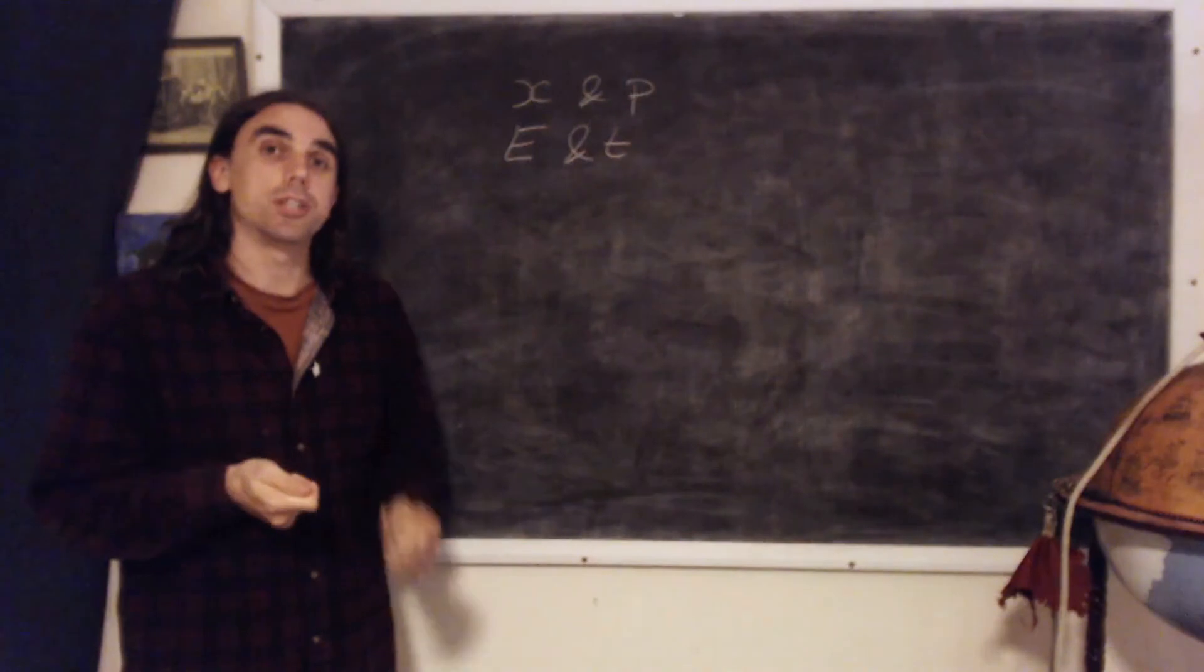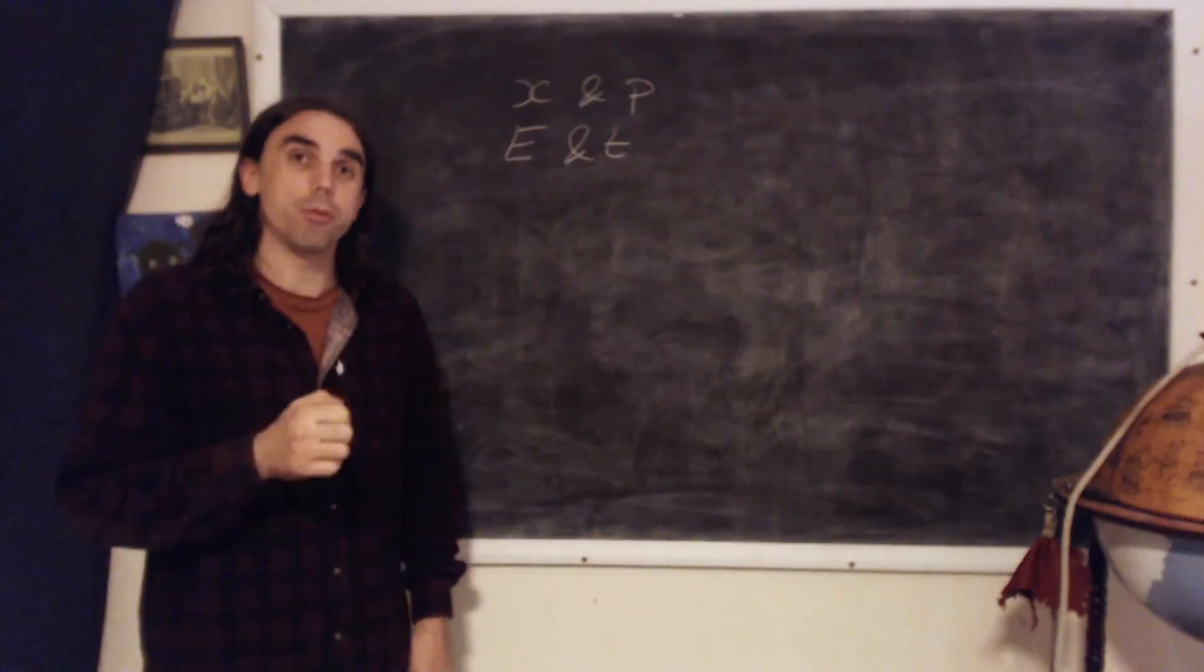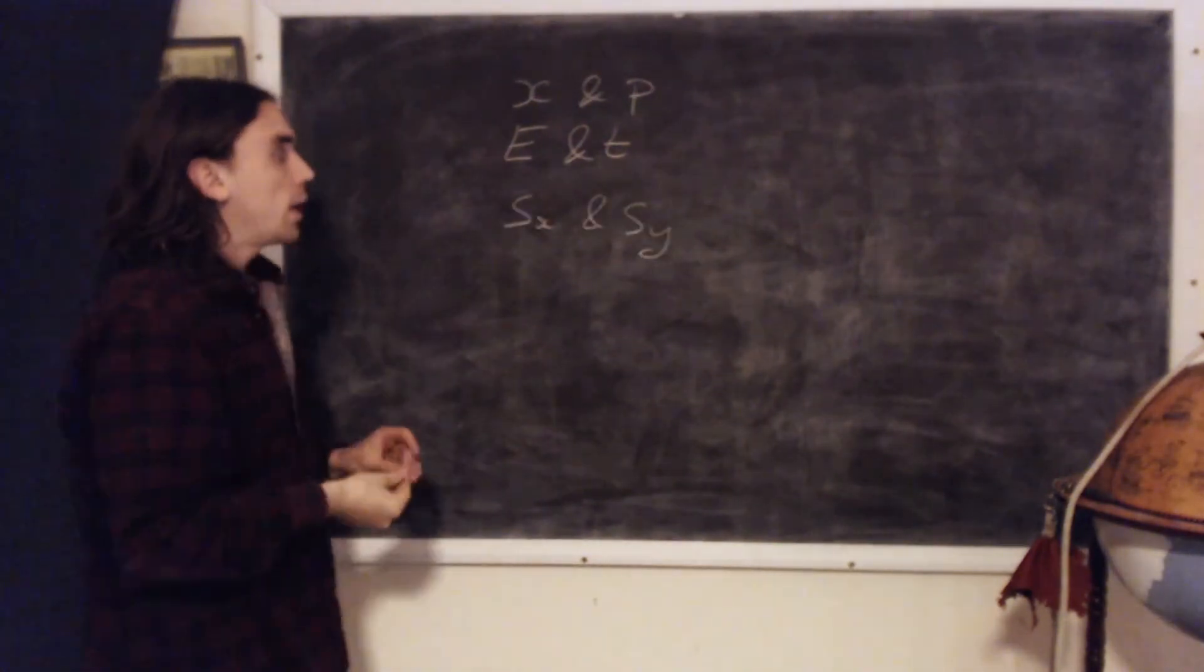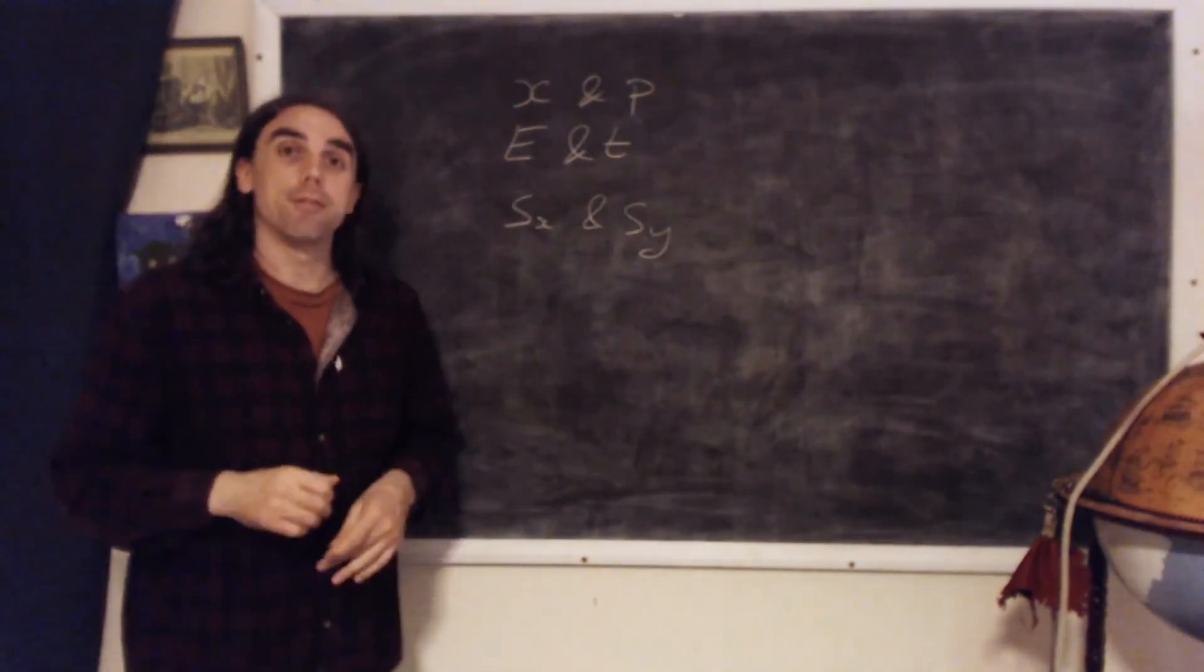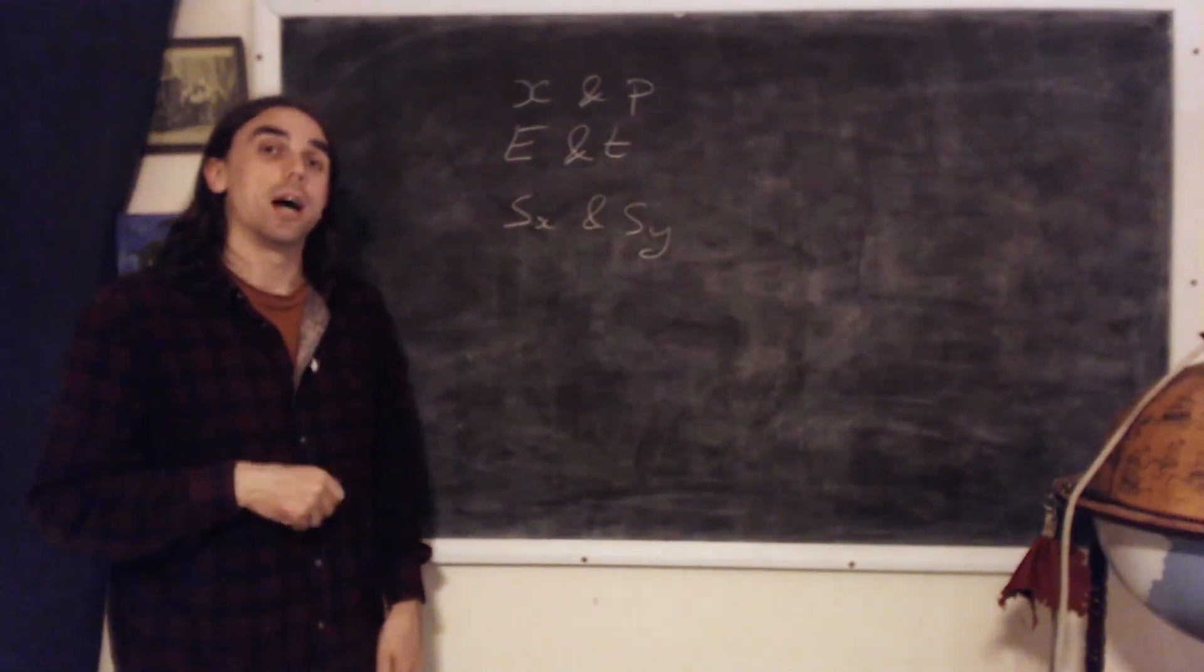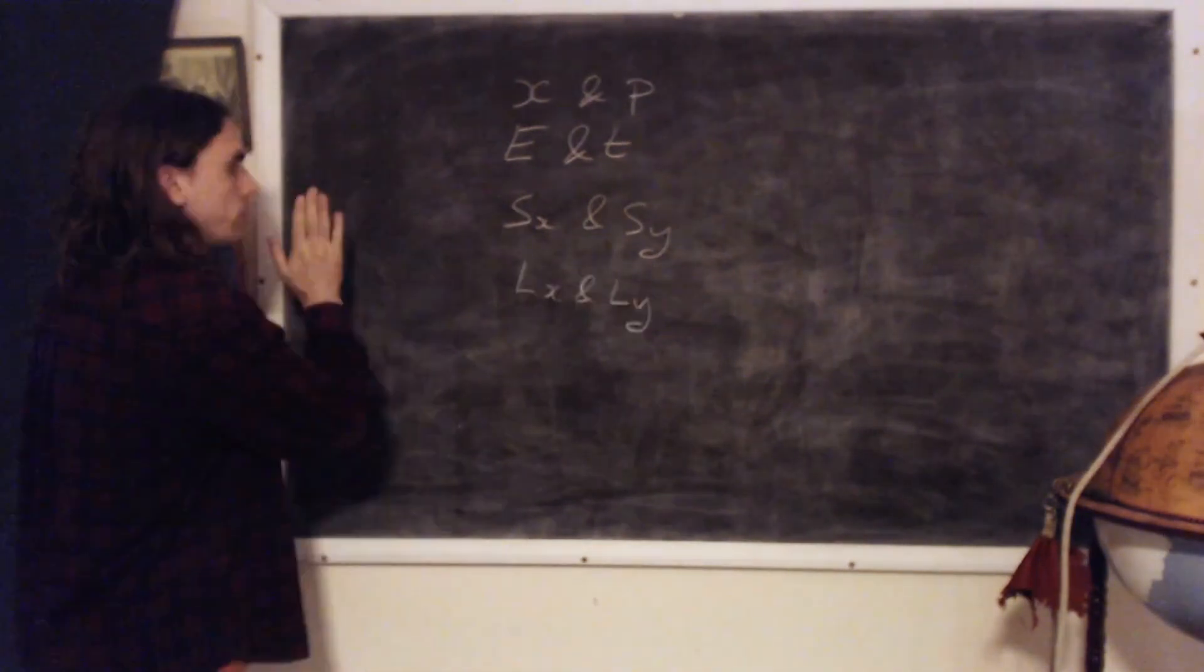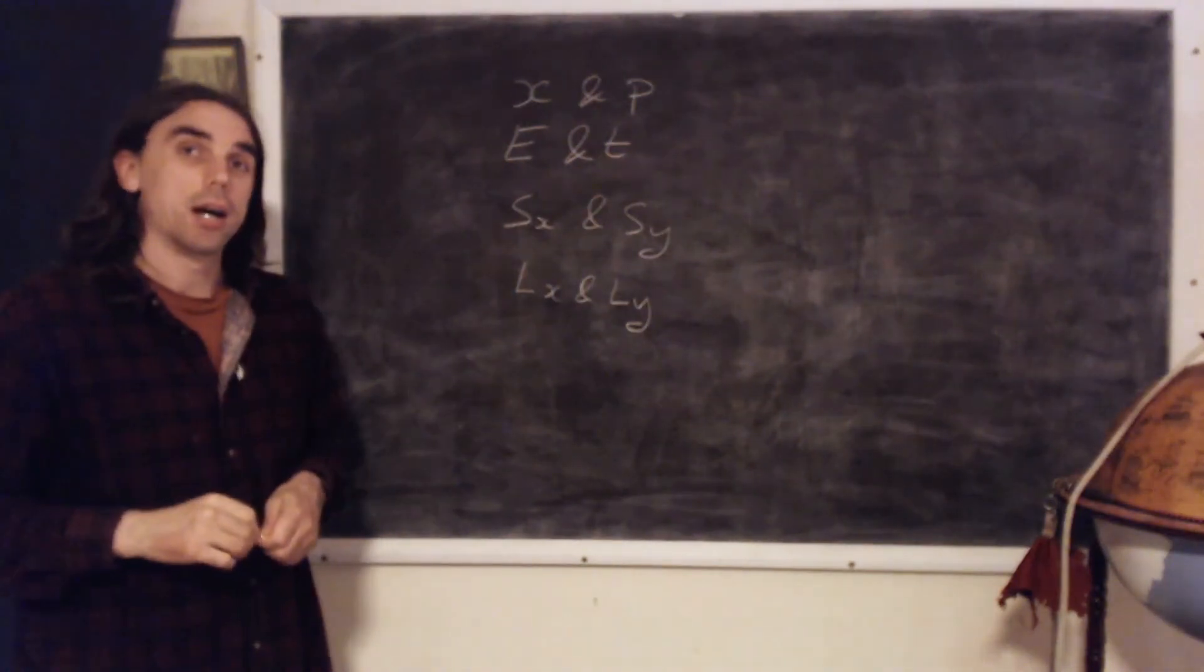We've seen there's an uncertainty relation between spin in different directions. If we know the spin in the x direction, say, we have complete uncertainty about the spin in the y direction. Spin is a form of angular momentum, the intrinsic angular momentum. And in fact, more generally, angular momentum, as we will see in future videos, also is an observable in quantum mechanics. And there is also an uncertainty relation between angular momentum in different directions.